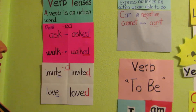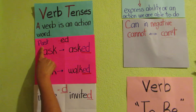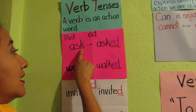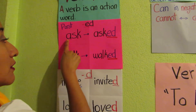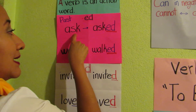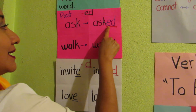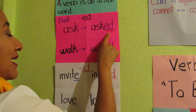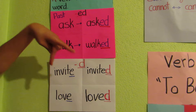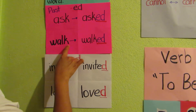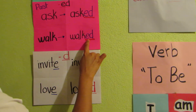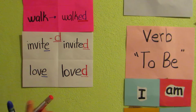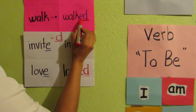At the end, for example, in the past, we need to add -ED when the verb finishes with a consonant. For example, 'ask' — but in past, we add -ED: 'asked.' Walk finishes with a consonant. In past, we add -ED: 'walked.'